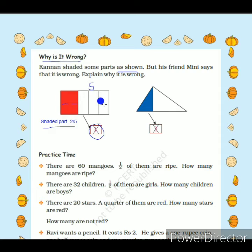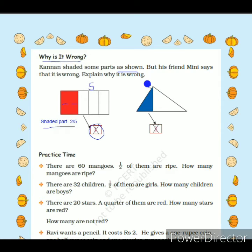Cannon should have written two-fifths as the shaded part. Now the second picture is a triangle. The triangle cannot be divided equally in any way, so the shaded part does not represent equal parts. Therefore, we cannot say the exact fraction of the triangle that is shaded or colored.